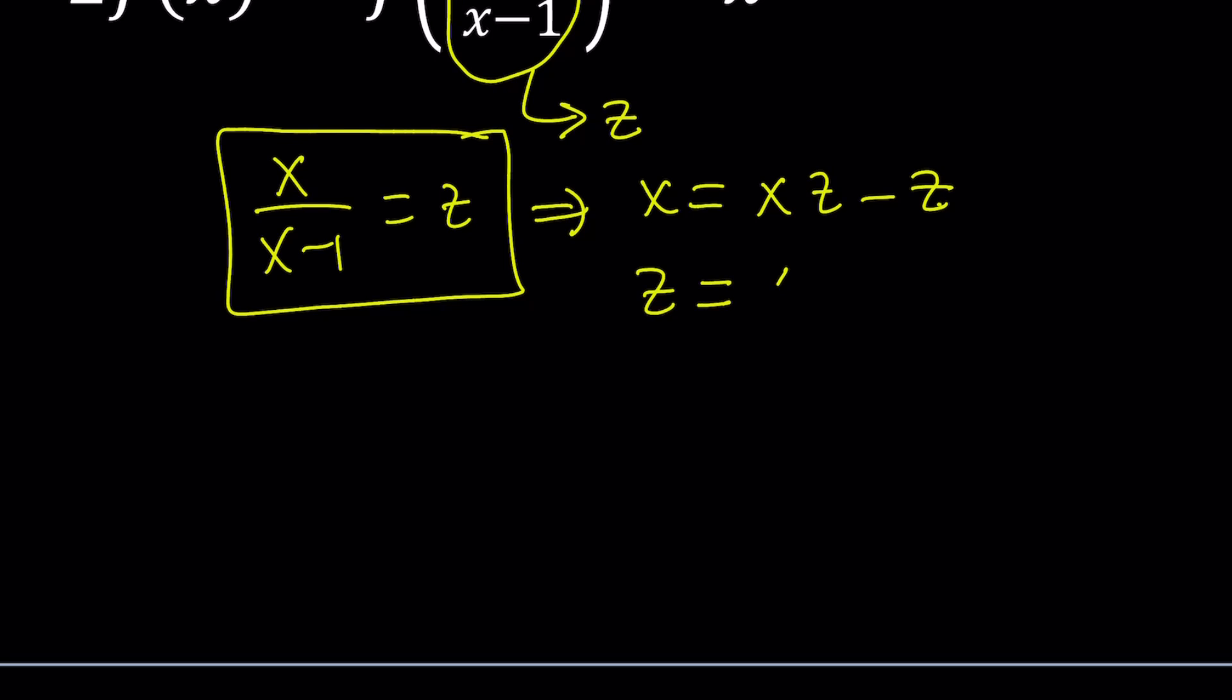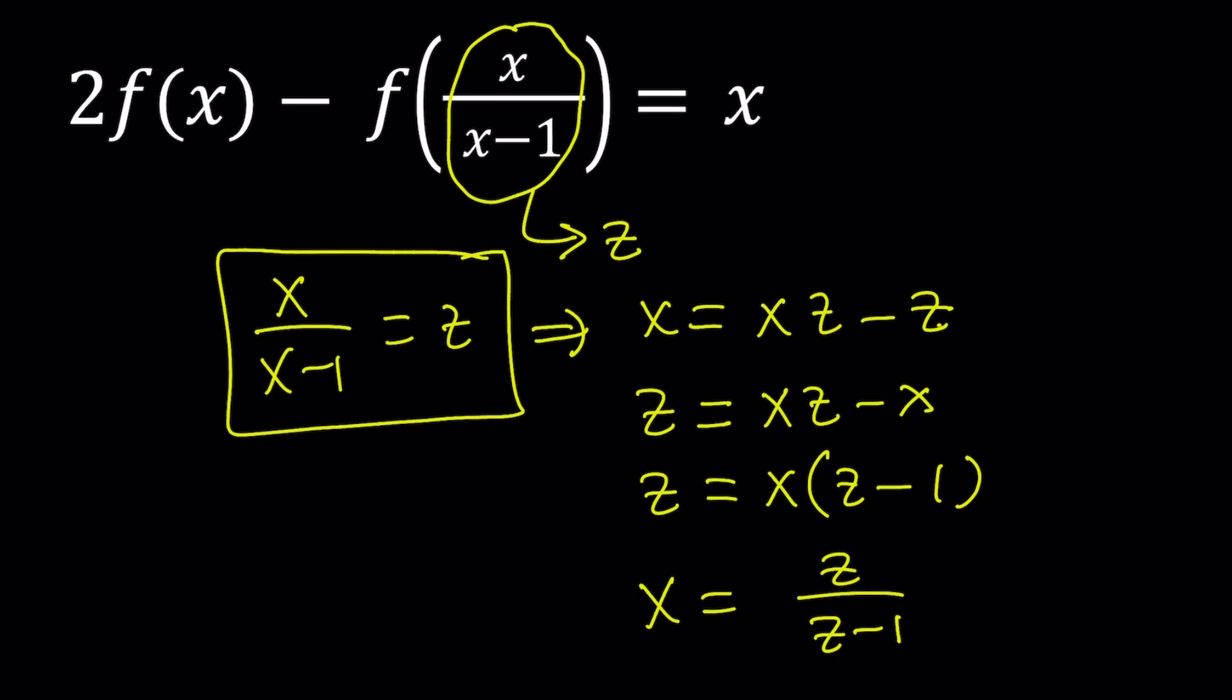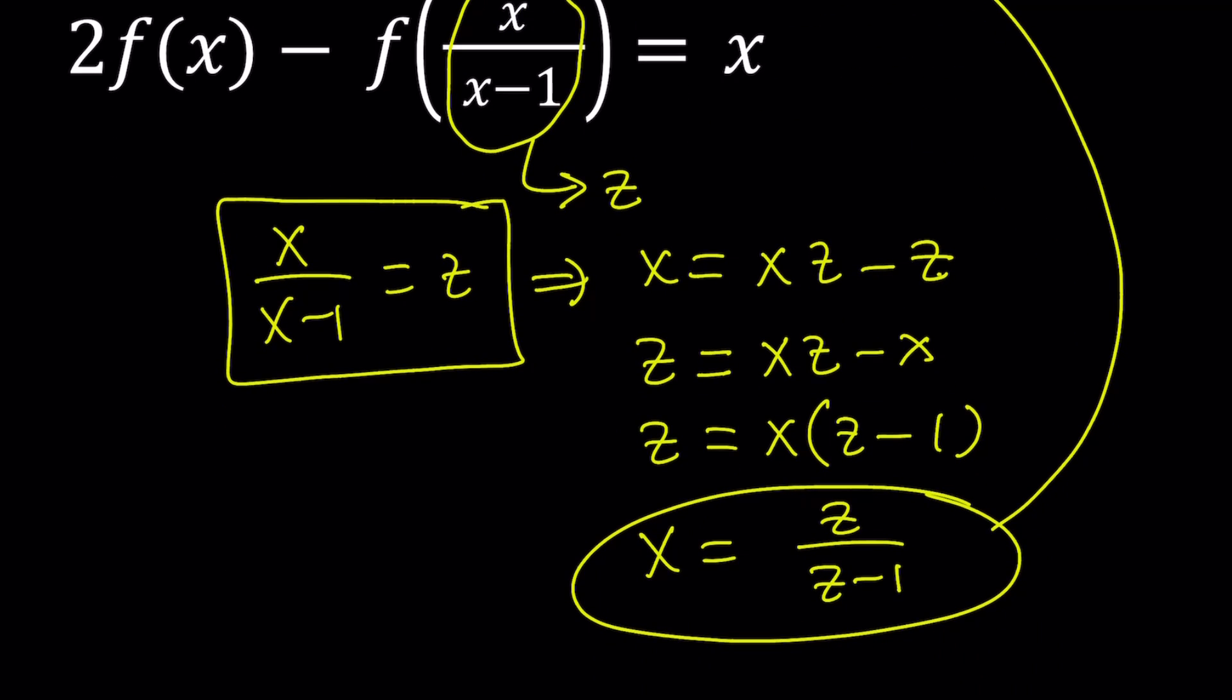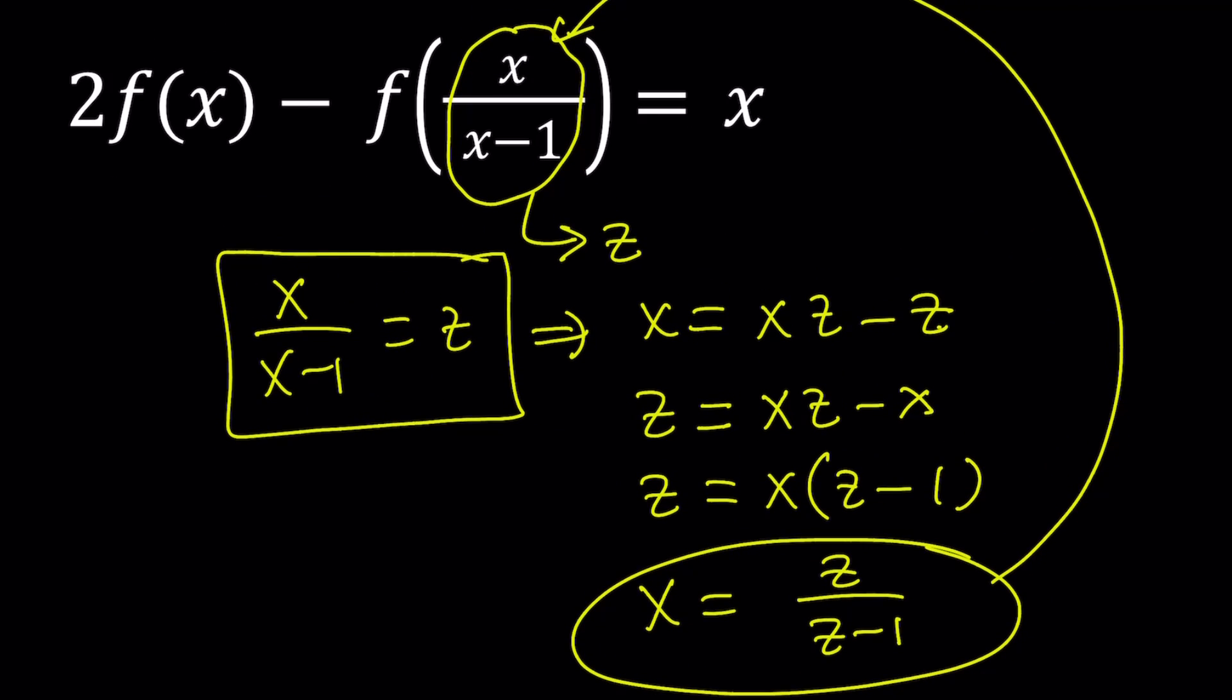Z equals xz minus x. Now we're going to factor out x here to get the x by itself. Divide both sides by z minus 1. You get x equals z over z minus 1. Great. Now this is pretty good because if I replace x with z over z minus 1 here, then this just turns into a z. And that's good.